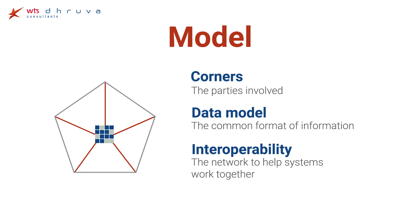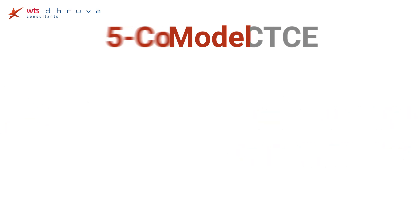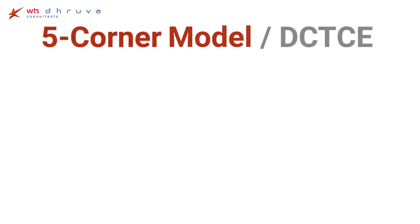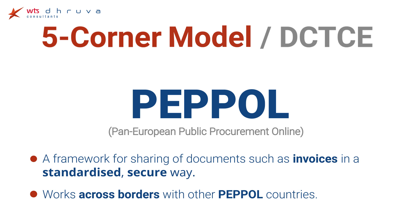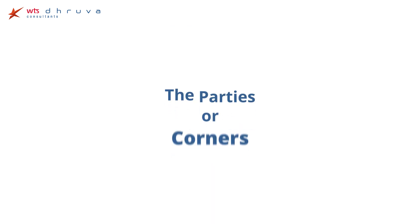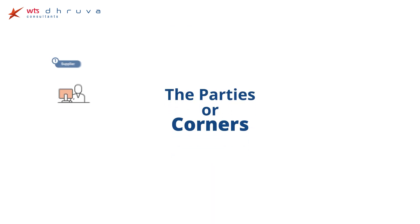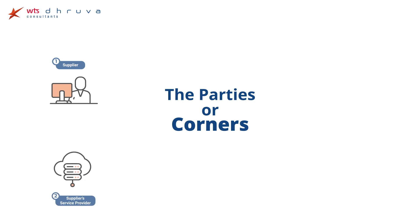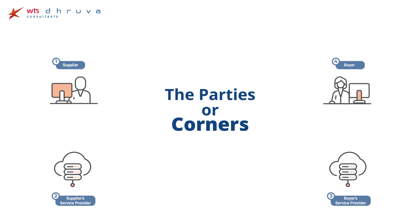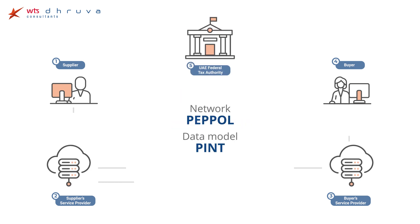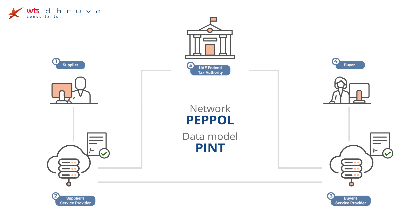In the UAE, the Ministry of Finance is considering a five-corner decentralized model using PEPPOL. The parties, or corners, will be: the supplier, the supplier's service provider, the buyer's service provider, the buyer, and the UAE Federal Tax Authority. Through the PEPPOL network, service providers facilitate the checking and sharing of invoice documents. The UAE will certify the service providers allowed to operate within this system.